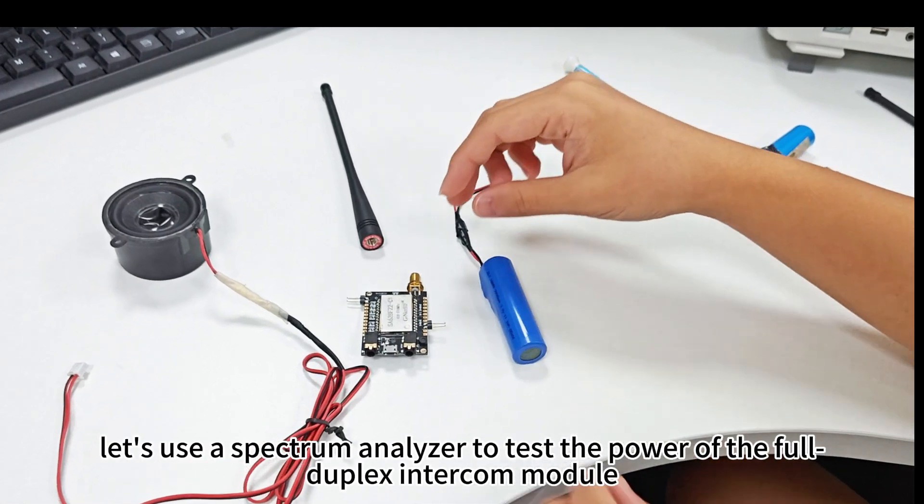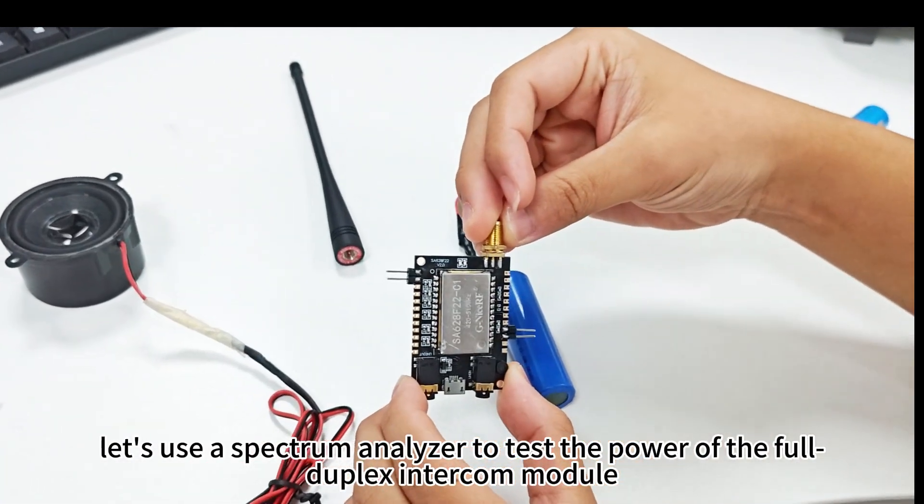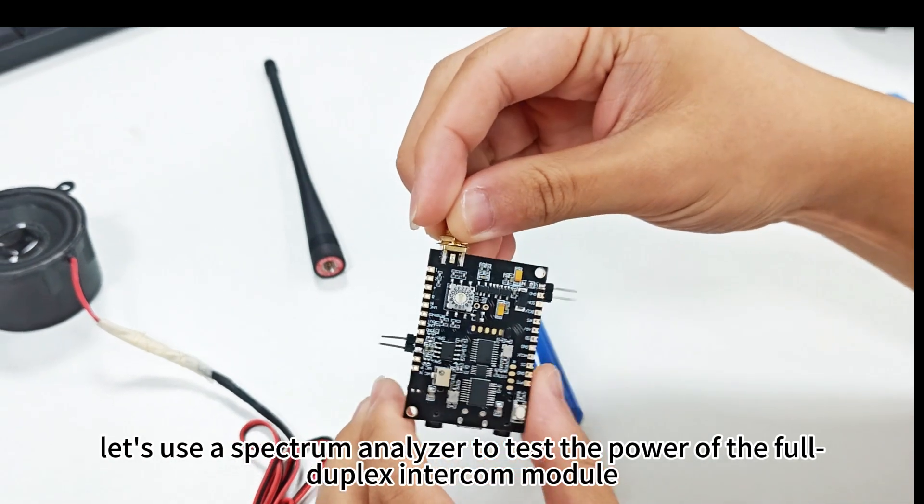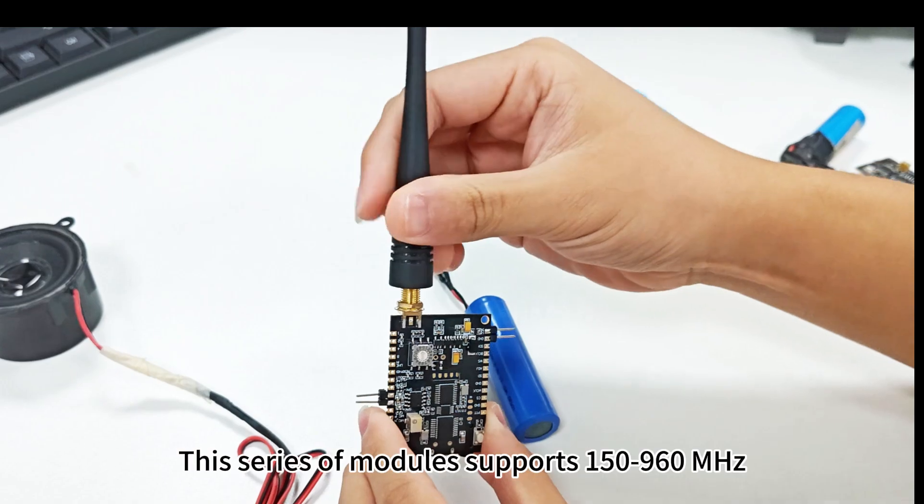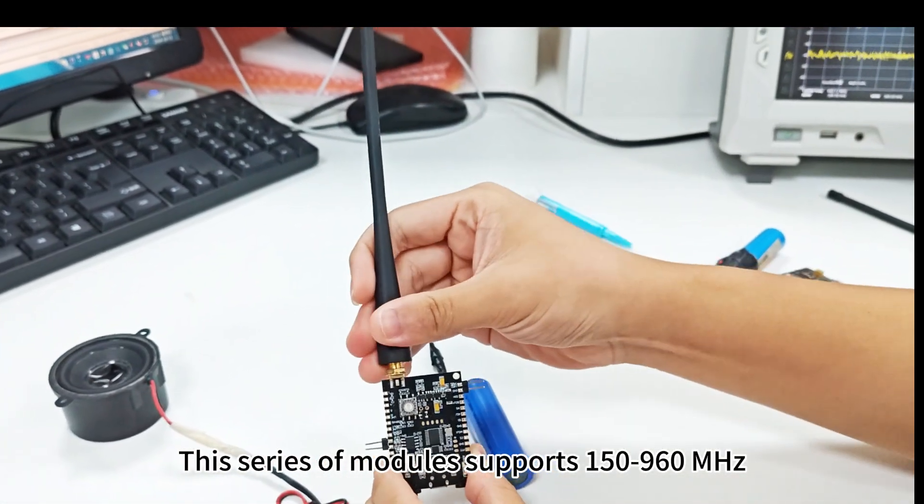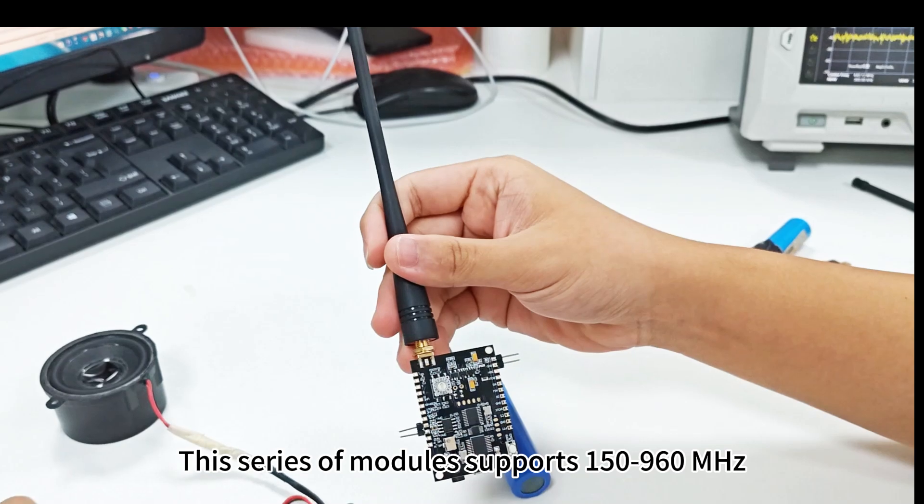Today, let's use a spectrum analyzer to test the power of the full duplex intercom module. First, connect the appropriate antenna to the module. This series of modules supports 150 to 960 megahertz.